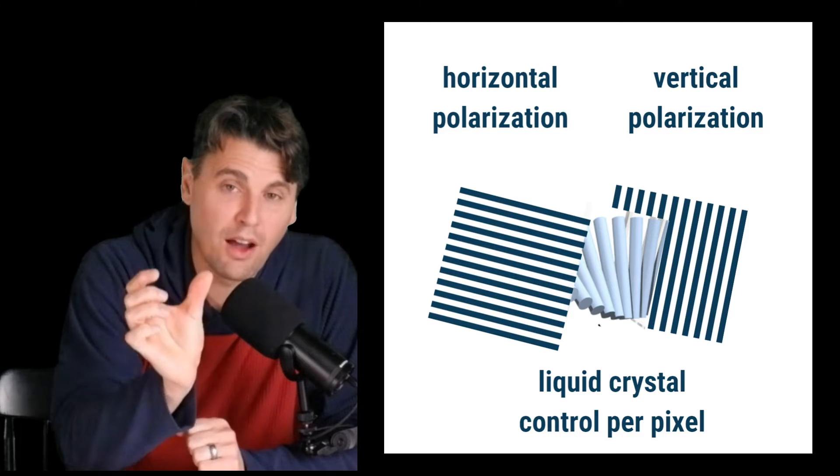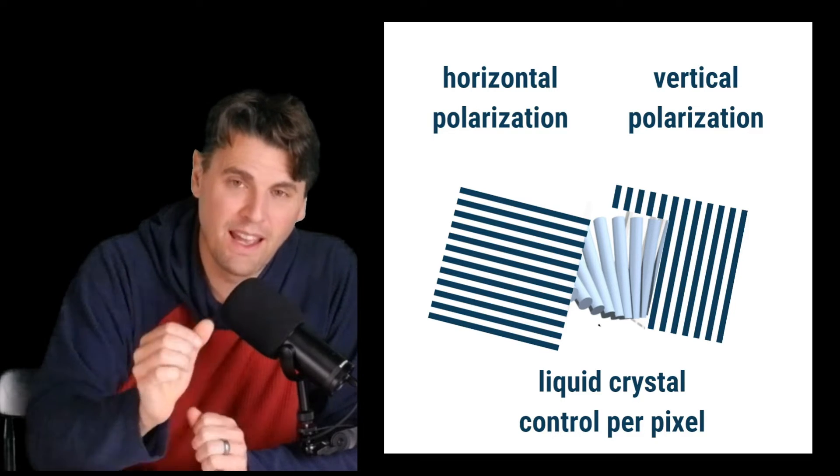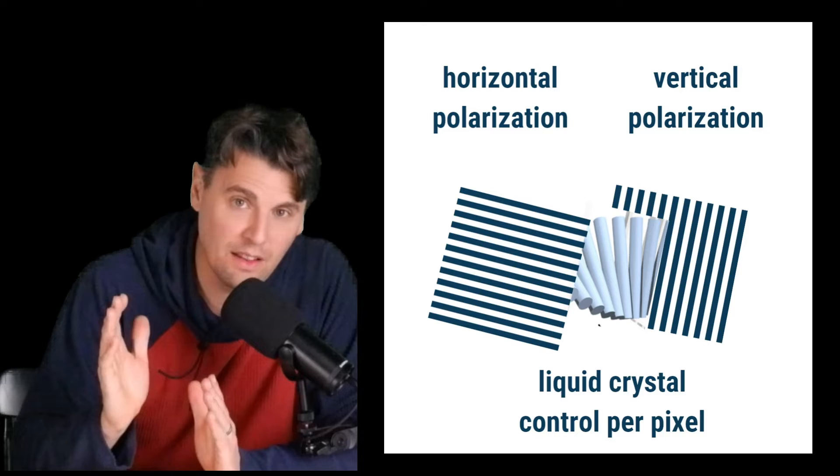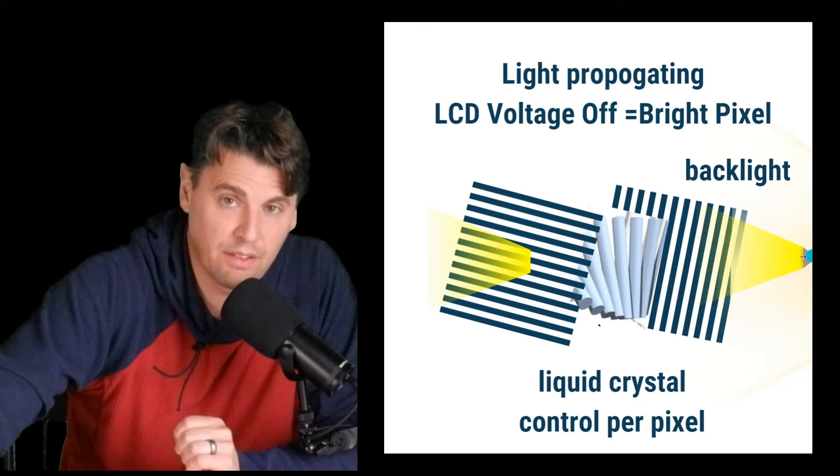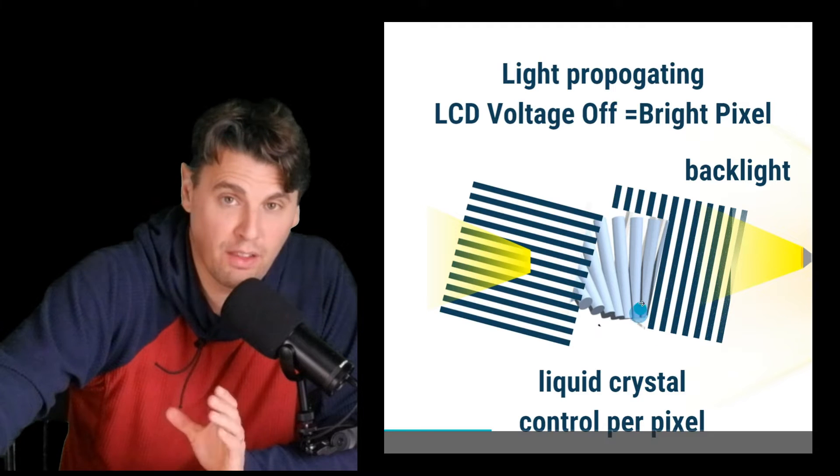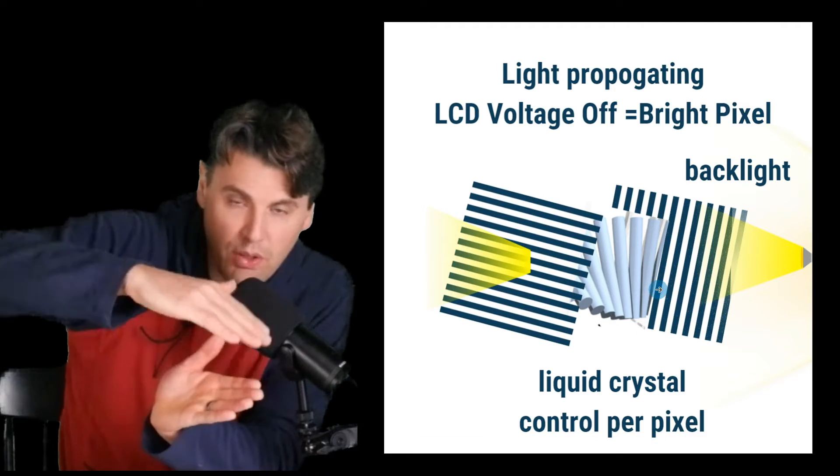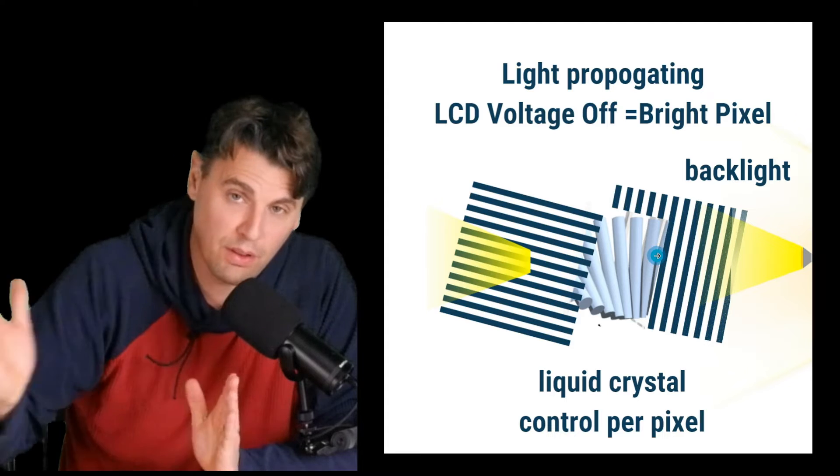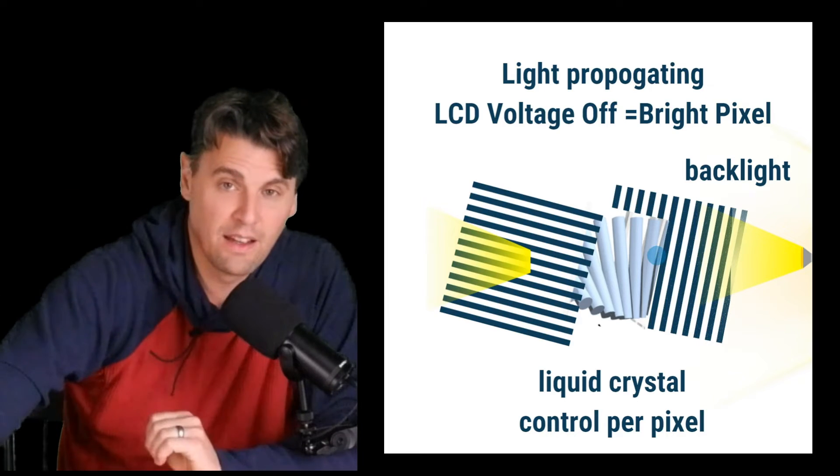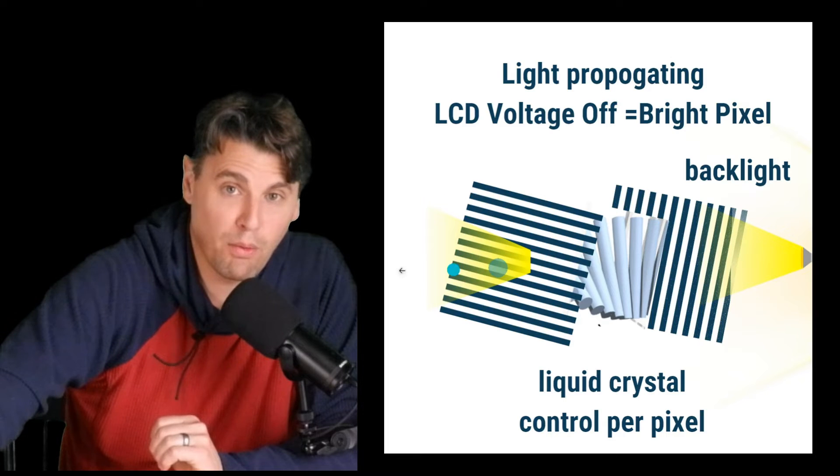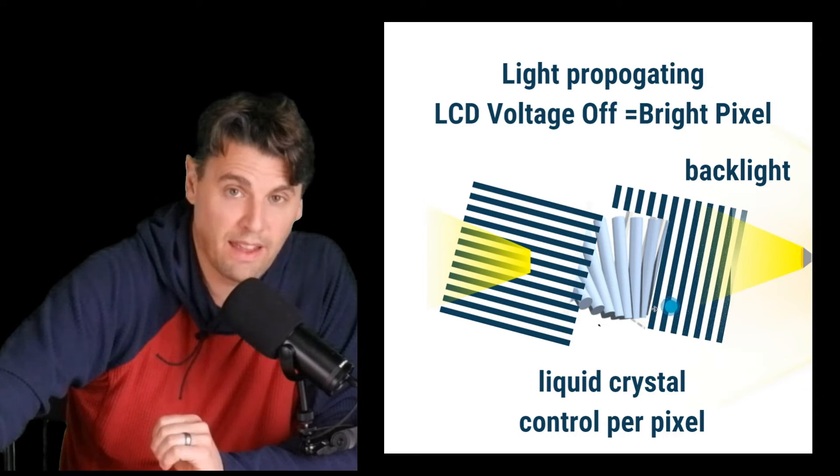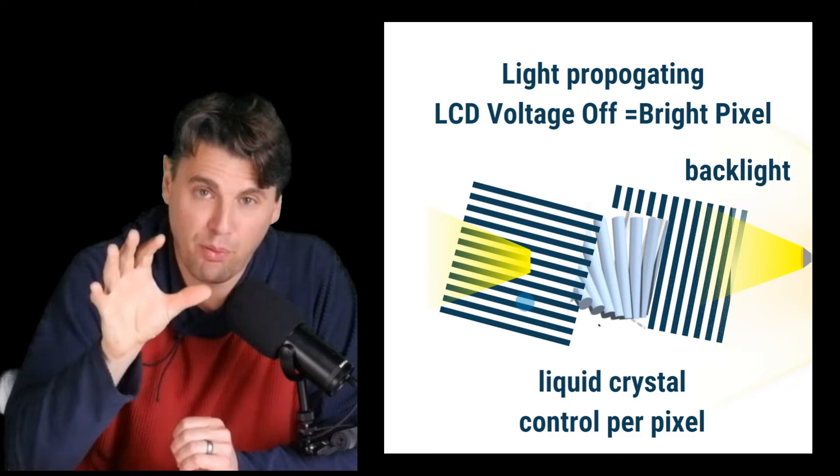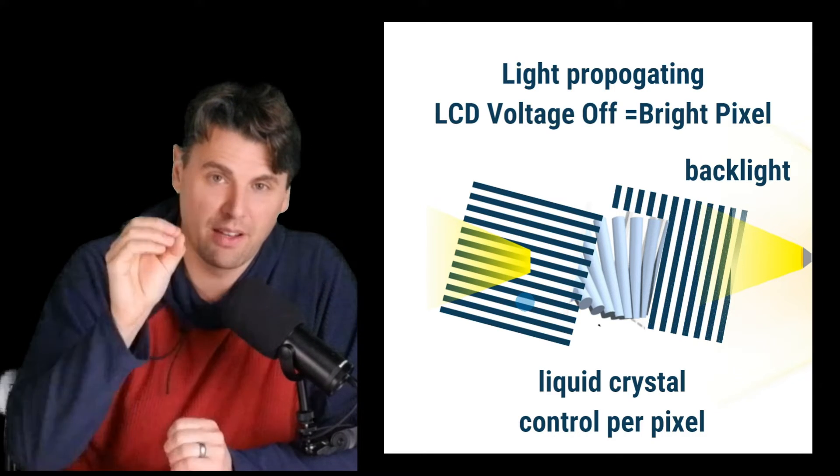If we have a liquid crystal and we apply a bias to that liquid crystal, it changes the orientation of the crystals and it can cause that light to rotate in its polarization. The idea is if we have a backlight on from the back and we turn the bias on for this liquid crystal, it's going to rotate the polarization so that the polarization is going to be up and down here. And as it passes through the liquid crystal, the polarization gets rotated so that it's horizontal. So light will pass through because it starts vertical and it rotates to horizontal. If you have the bias or voltage off, that's going to lead to what we call a bright pixel because the light is going to get through.